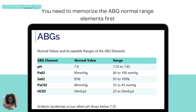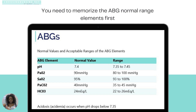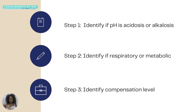Now you can move into the three steps for ABG interpretation. Step one: identify if the pH indicates acidosis or alkalosis. Step two: identify if it's respiratory or metabolic. Step three: identify the compensation level — is it partially compensated, compensated, or uncompensated?